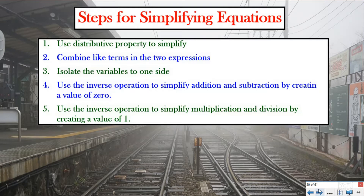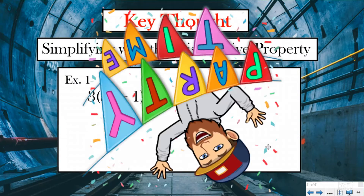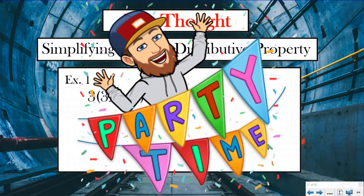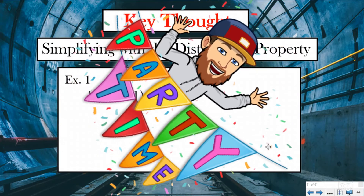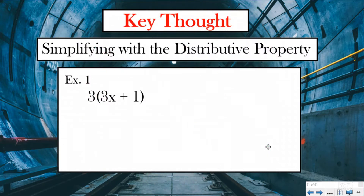We are going to use the inverse operation to simplify multiplication and division by creating a value of one. We have an awesome song about the distributive property — go ahead and push play on that. That is one of my favorites; however, that is the third grade standard for distributive property. We're getting into linear equations today, so although it's similar, it is a little bit different in how it is used in this context.